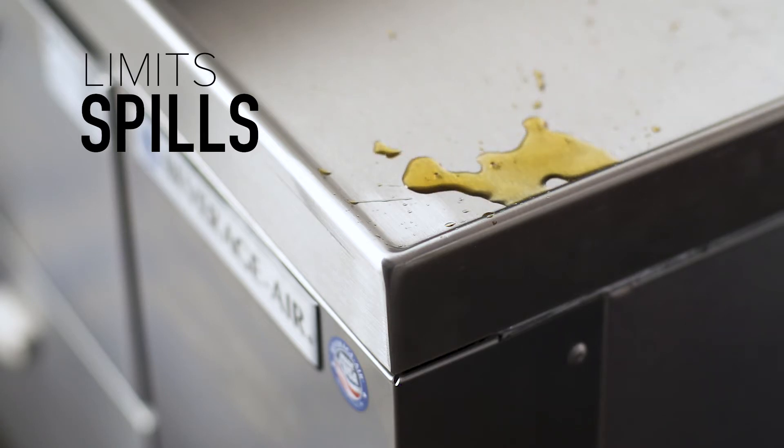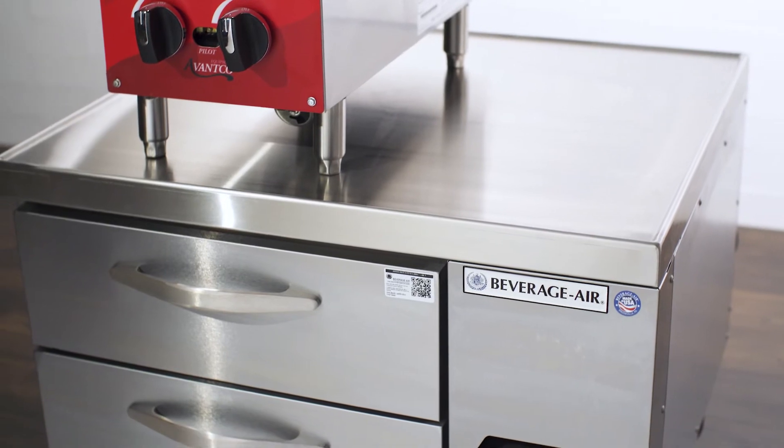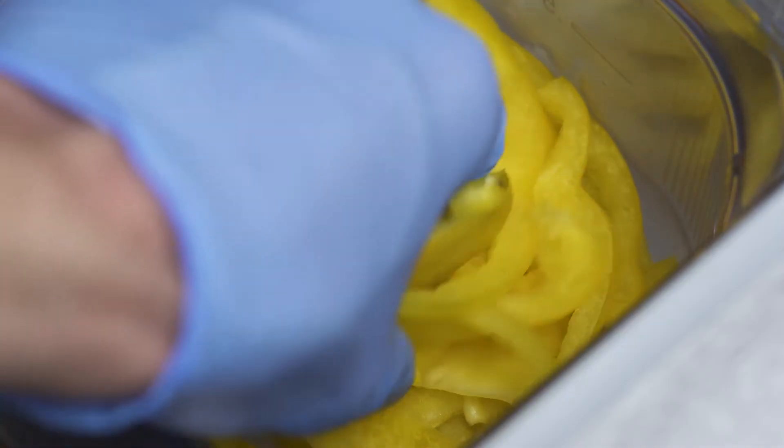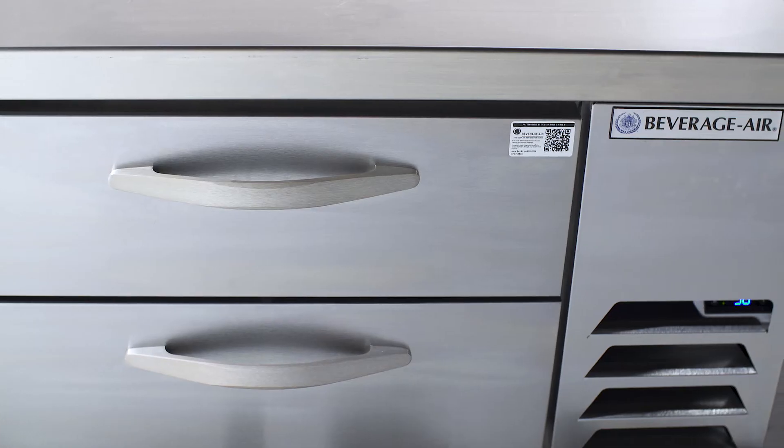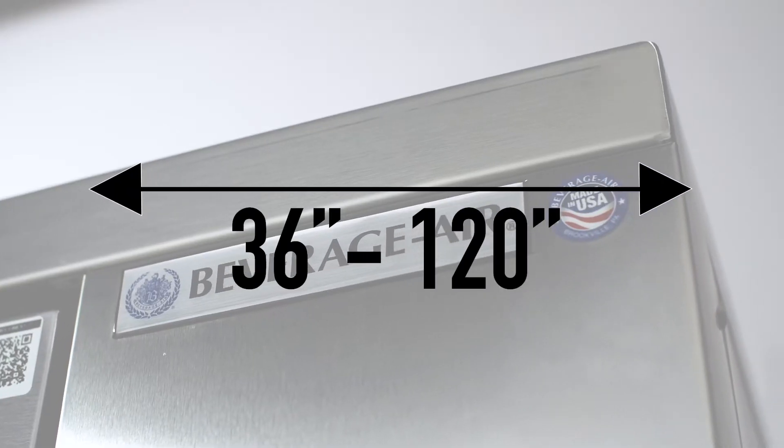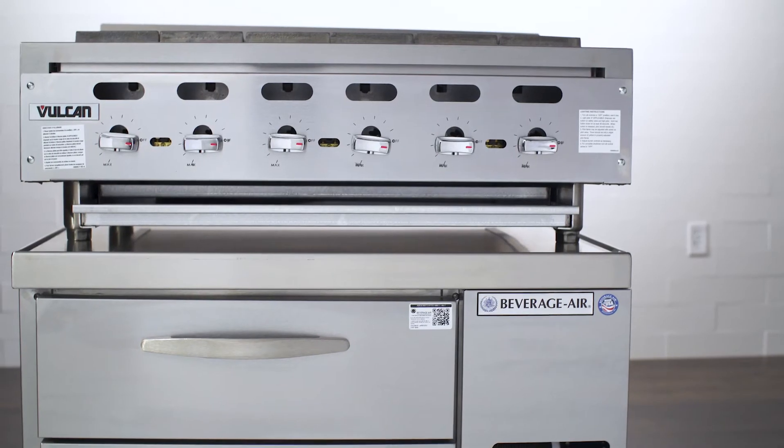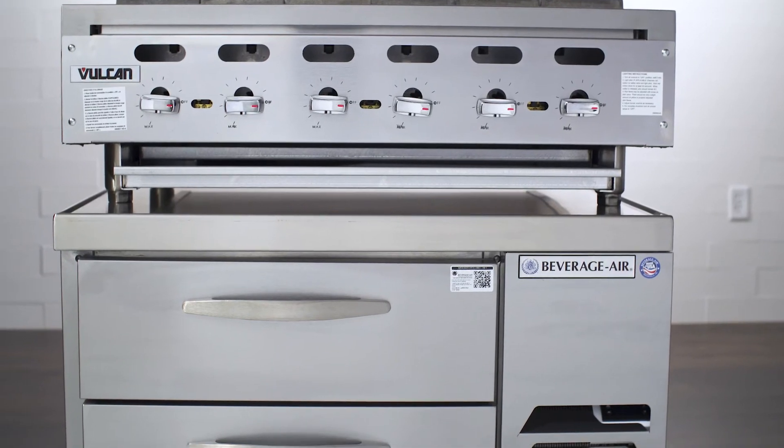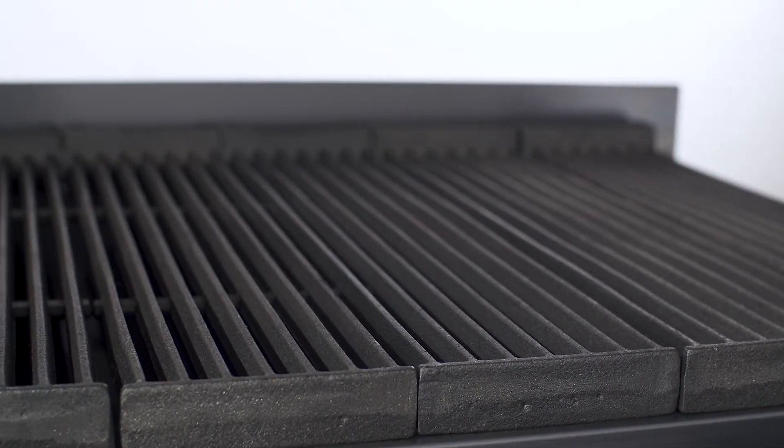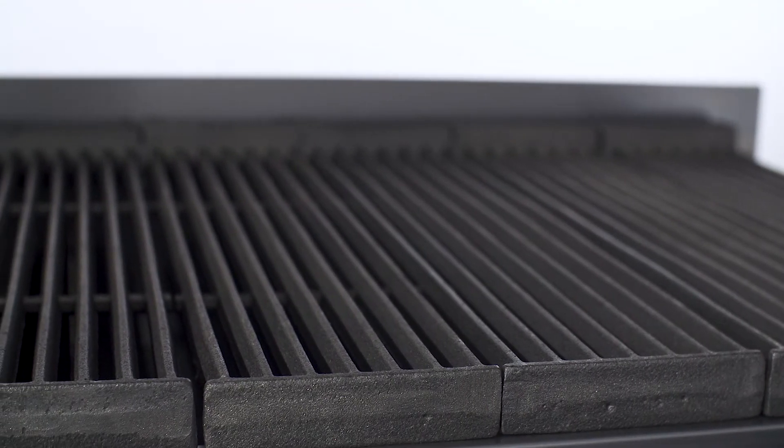Beverage Air Chef Bases are available in both refrigerator and freezer models depending on what you need to store, and they come in a variety of widths ranging from 36 inches to 120 inches. So if you have a single charbroiler or an entire line of cooking equipment, Beverage Air has the perfect unit for you.